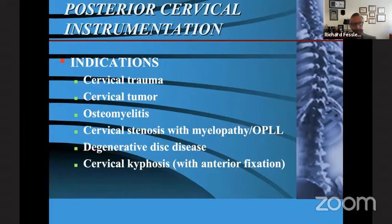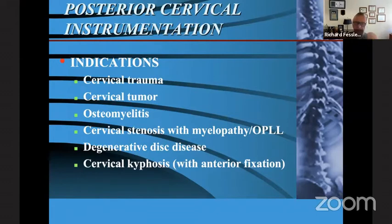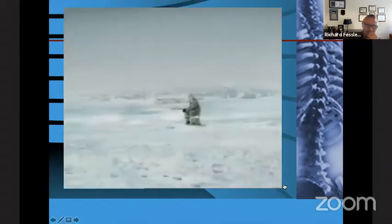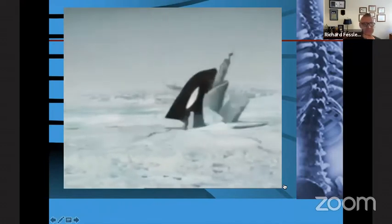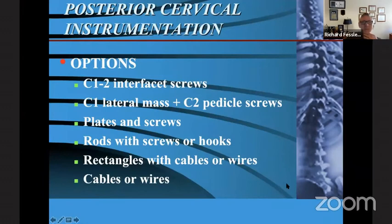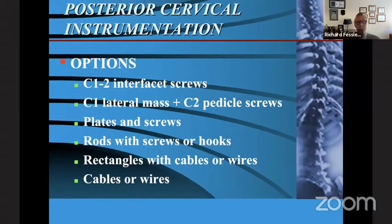How about posterior instrumentation? Indications are cervical trauma, cervical tumor, osteomyelitis, cervical stenosis with myelopathy or OPLL, degenerative disc disease, or cervical kyphosis — in that case combining it with anterior fixation as well. Options for posterior instrumentation include C1-C2 interfacet screws, C1 lateral masses combined with C2 pedicle screws, plates and screw systems, rods with screws or hooks, rectangles with cables or wires, or just cable and wiring.